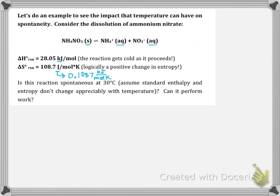They ask us if this reaction is going to be spontaneous at 30 degrees Celsius and if it can perform work. To answer questions about spontaneity or work, we need to calculate delta G. We have a delta H value and a delta S value, so we're going to use our go-to thermodynamic equation. We need to convert our temperature into kelvin, which gives us 303 kelvin.